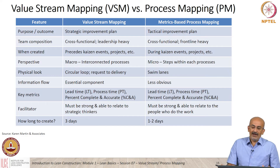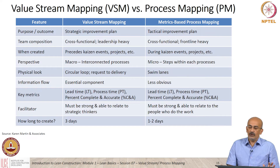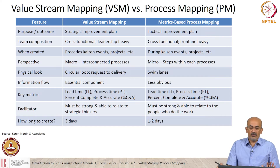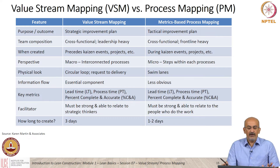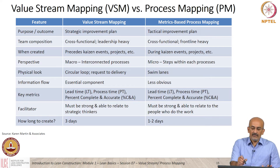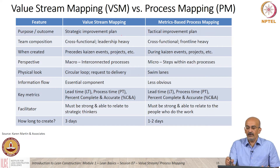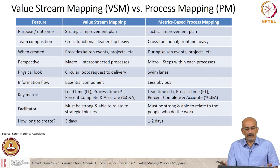When you compare a value stream map with a process map — this is always a question that comes up — to summarize: a value stream map is more from a strategic point of view, a macro level. A process map is tactical, or a micro point of view.